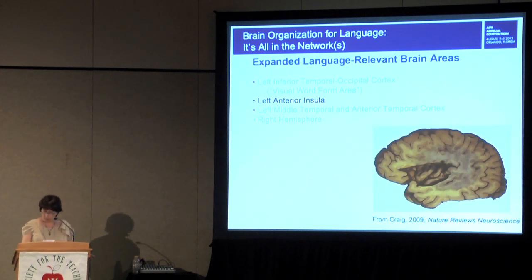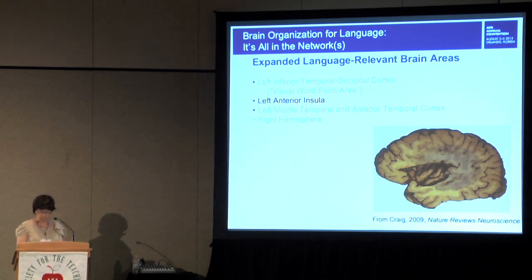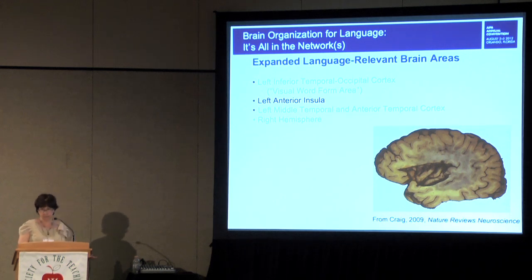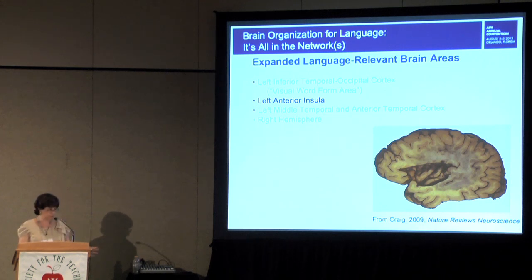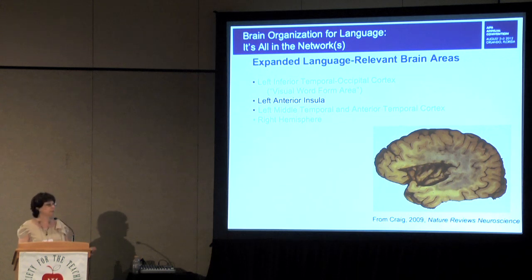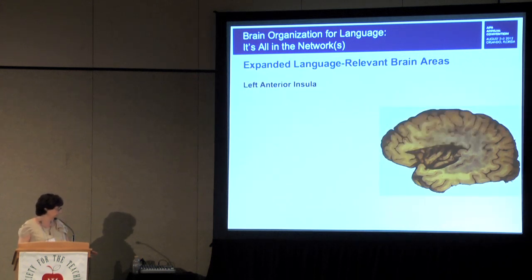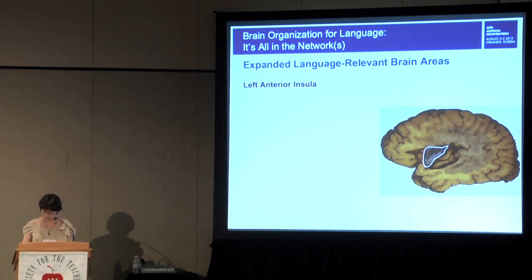An additional region shown to be relevant for language is the insula — a part of the cortex that's buried or hidden beneath the lateral surface. Wernicke originally speculated that the insula might be involved in language function, but the idea wasn't pursued for a very long time. However, a number of recent findings have suggested that the anterior part of the left insula does play an important role in language.